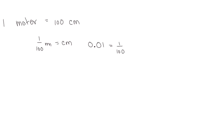So if we had three hundredths of a meter, we would write that as three hundredths of a meter in decimal form.